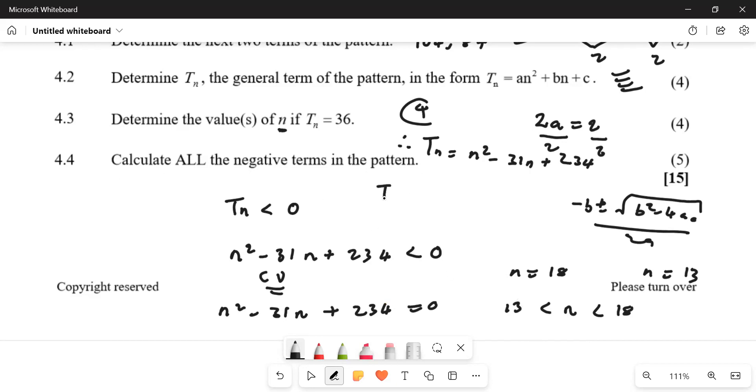So it means between 13 and 18, it's T14, T15, T16, and T17. So if you substitute T14 and T15...